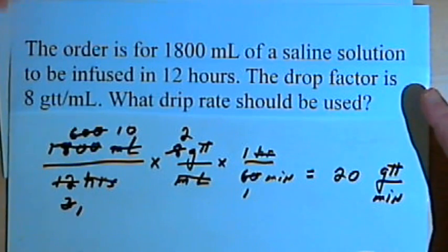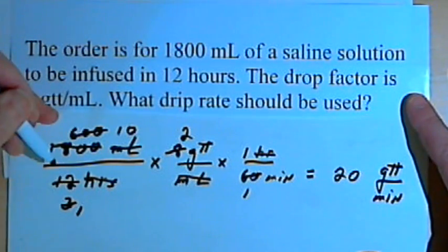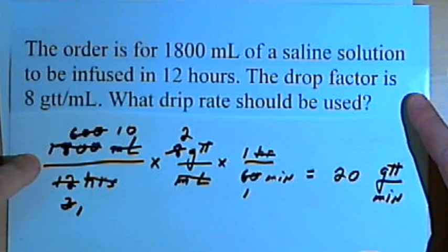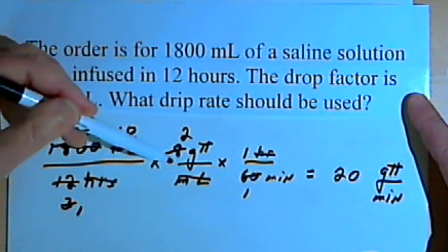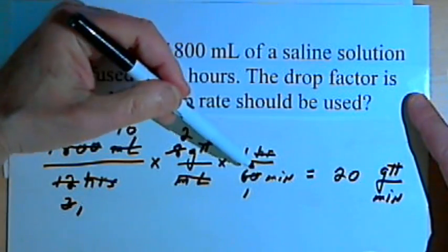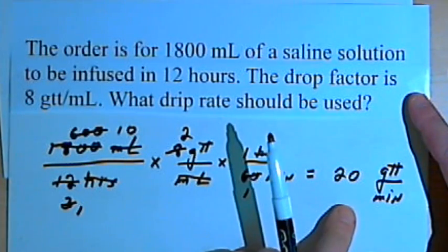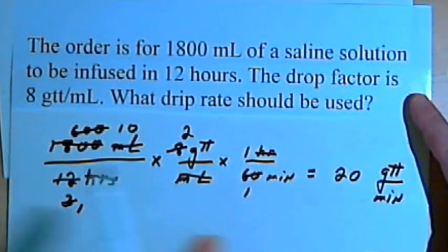So the basic approach was: I multiplied the order times the drop factor, used a conversion, and that gave me my answer. Let's do one more of these.